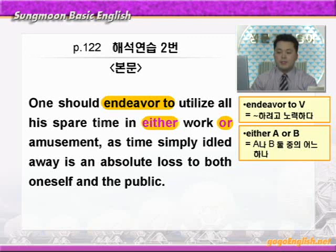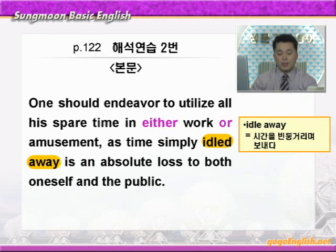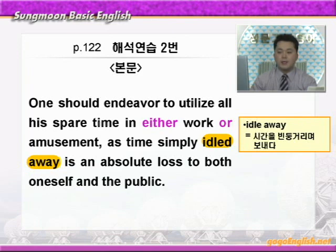as가 나왔습니다. 여기 as는 '뭐뭐 때문에' 이런 뜻이죠. 'time simply idled away.' idled away에 동그라미 쳐보세요. 'idled away'는 시간을 빈둥거리며 보내다 이런 뜻인데, 여기 idled가 과거분사로 앞에 time을 수식하고 있으니까 'time simply idled away' — 단순히 빈둥거리며 보낸 시간, 즉 낭비된 시간은 'an absolute loss.' absolute는 절대적인, loss는 손실·손해, 절대적인 손실이다.